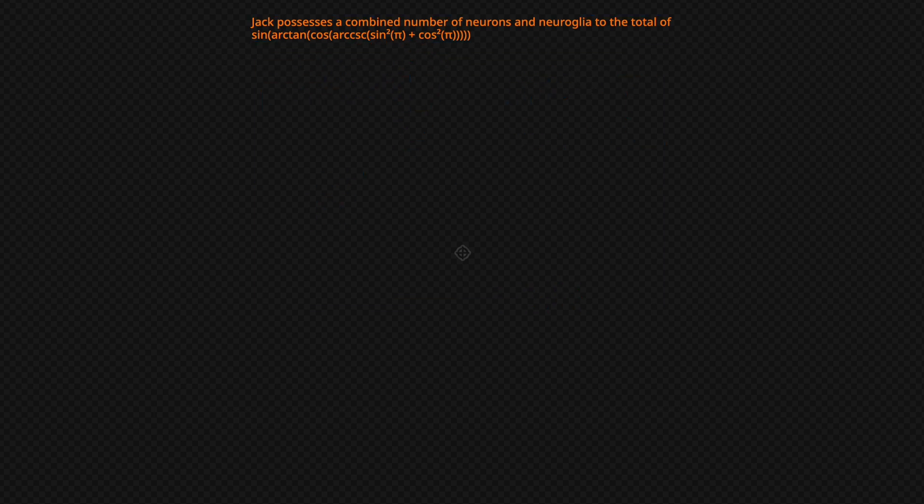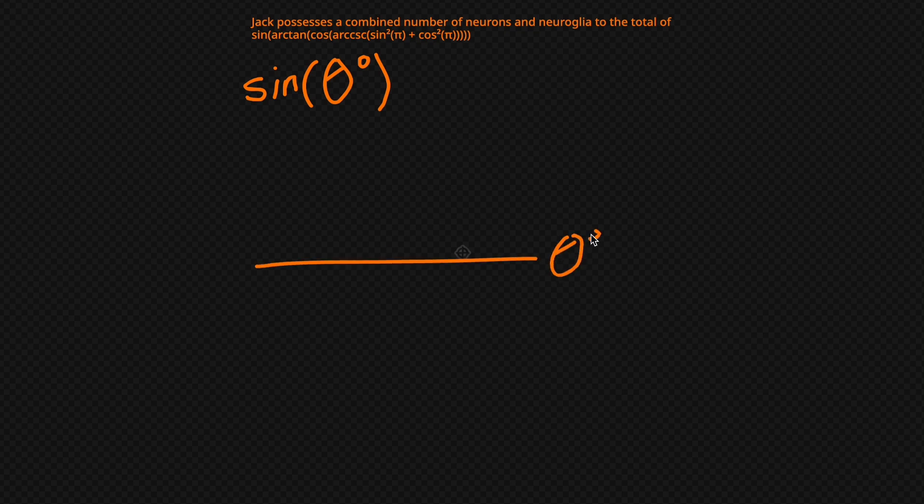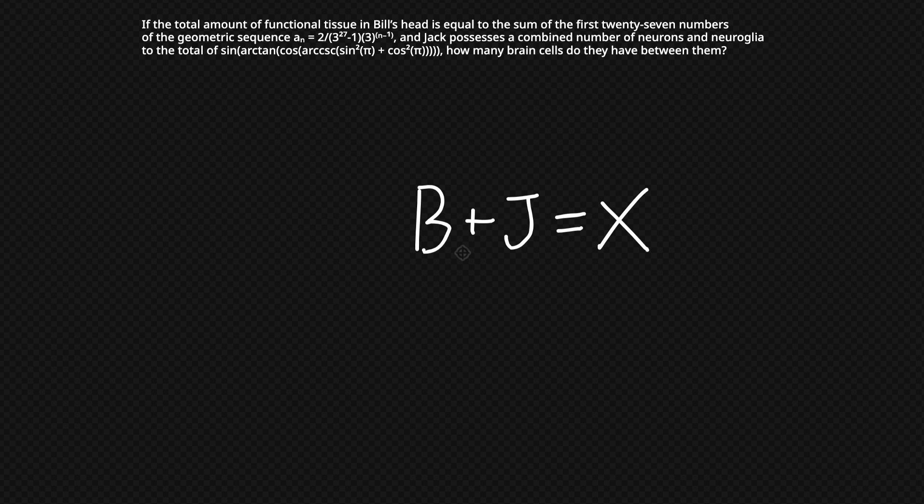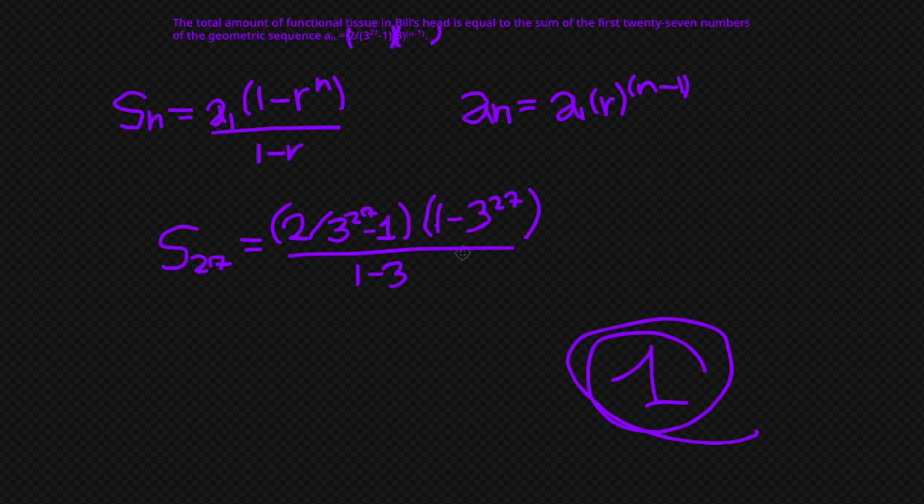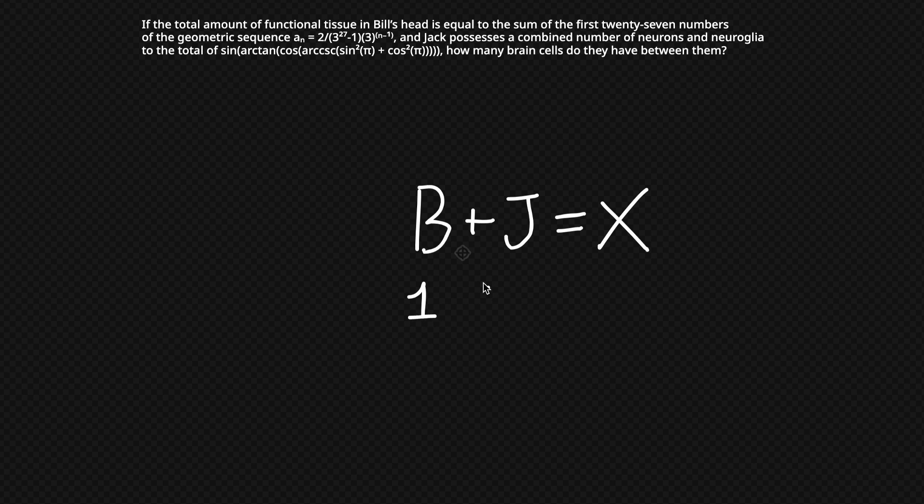So now we have 0 degrees and we are down to our last little set of parentheses, which is sine of 0 degrees. And we already know that the sine of 0 degrees, sine is 0 there. So our answer is 0 brain cells. So now we can just hop on back to our equation. We know that B is 1. And now we know that J is 0. So the total number of brain cells that Bill and Jack have together is 1. Which really shouldn't be that surprising considering.